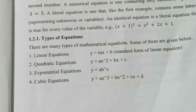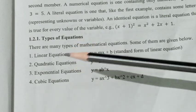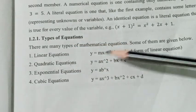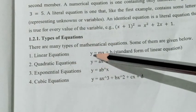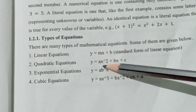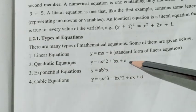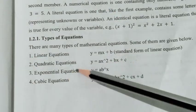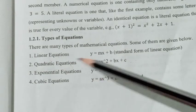Next are the types of equations. The first type is a linear equation: y is equal to mx plus b — this is the standard form. A quadratic equation is y equals ax squared plus bx plus c. An exponential equation is y equals a times b raised to x.